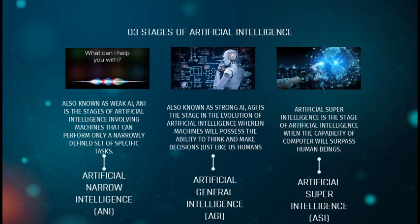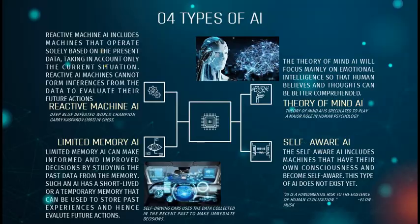Now let's understand the stages of artificial intelligence. We have ANI, AGI, and ASI. Artificial Narrow Intelligence, also known as Weak AI, involves machines that can perform only a narrowly defined set of specific tasks. Artificial General Intelligence, also known as Strong AI, is the stage where machines will possess the ability to think and make decisions just like humans. Finally, Artificial Super Intelligence is the stage where the capabilities of computers will surpass those of human beings.